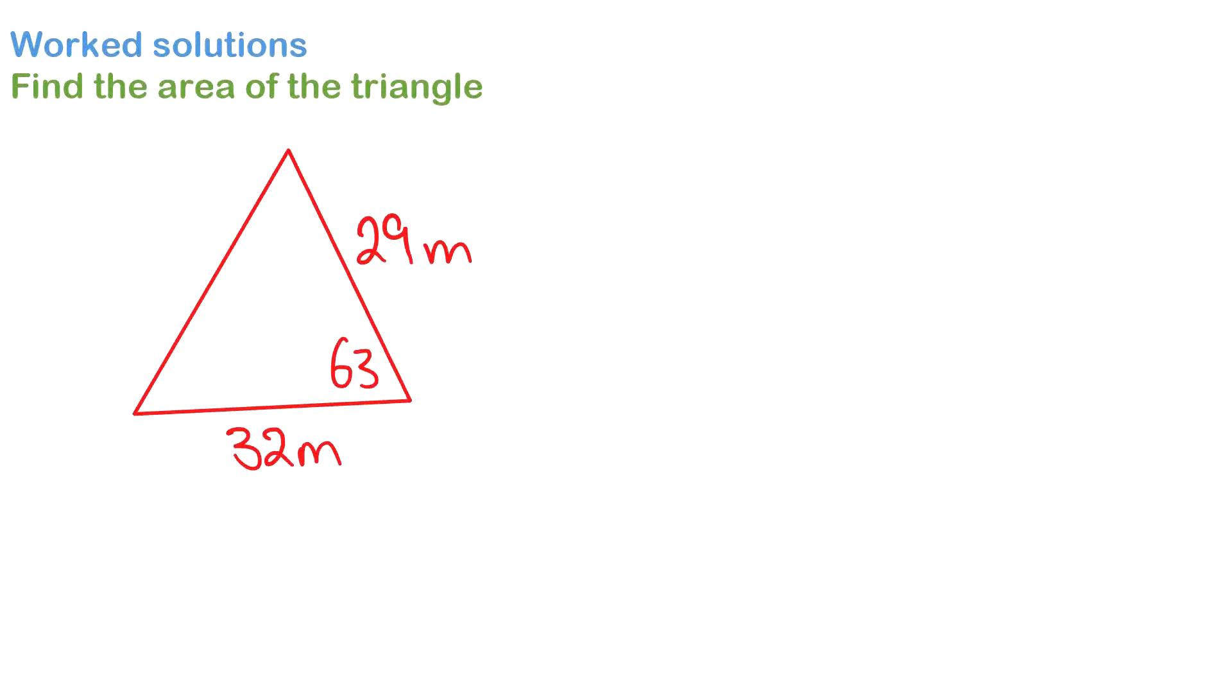Here we have a triangle and we're going to label our sides. This time instead of starting with our unknowns being A, we're going to start with our capital C for our angle. So our 63 is our angle, then I can go A and B.